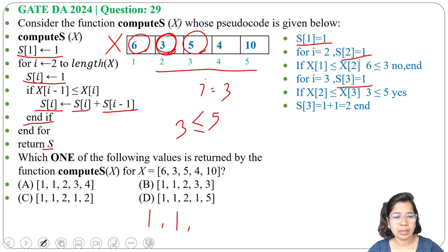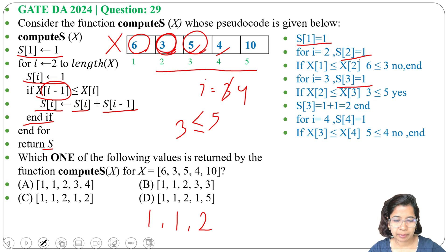Next, for i = 4, S[4] = 1. And if X[i-1] ≤ X[i], means if 5 ≤ 4? No. So we'll exit from if and S[4] value will be 1.